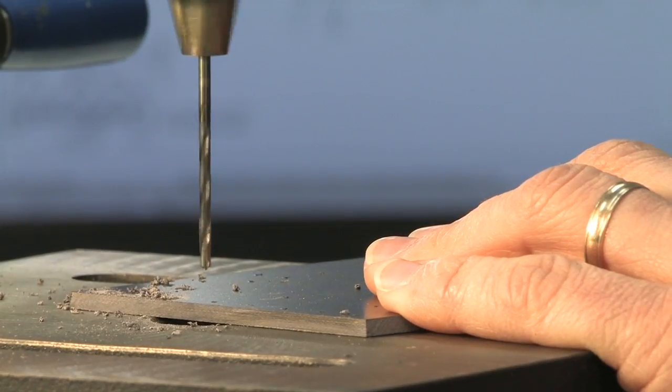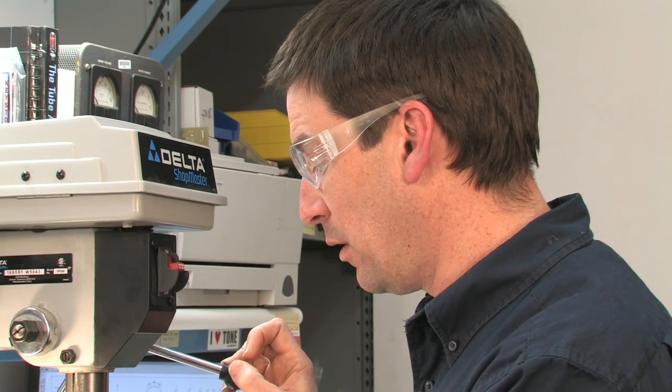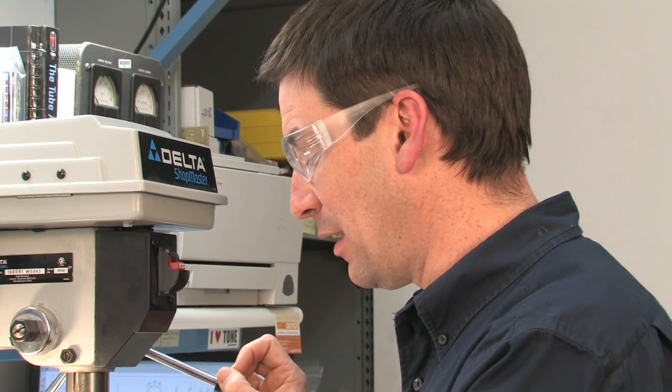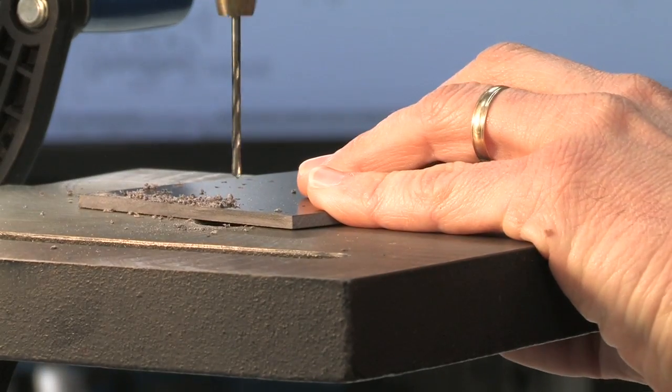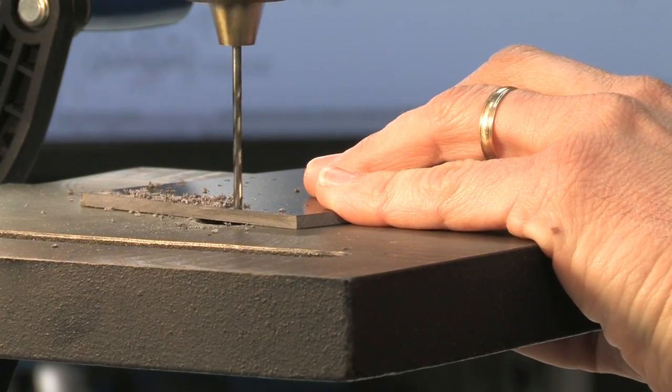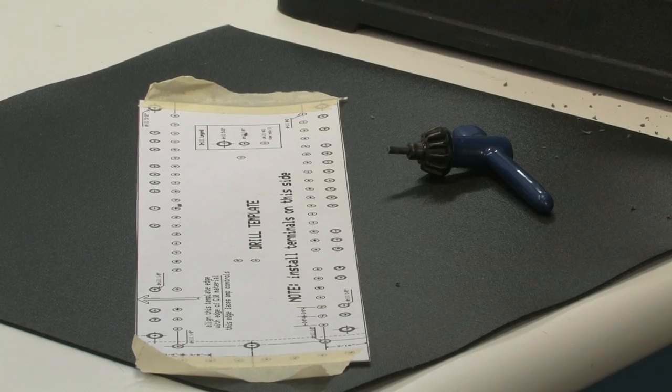Here's where it's important to put very good divots in the board so that the drill bit, when it comes down, will go right into those divots and cut holes straight through the board. The divots make it possible to drill straighter holes.